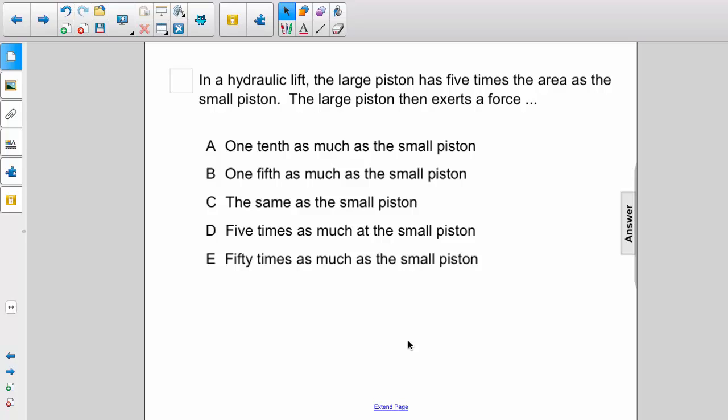A, one-tenth as large as the small piston; B, one-fifth as large as the small piston; C, the same as the small piston; D, five times as large as the small piston; or E, fifty times as large as the small piston.